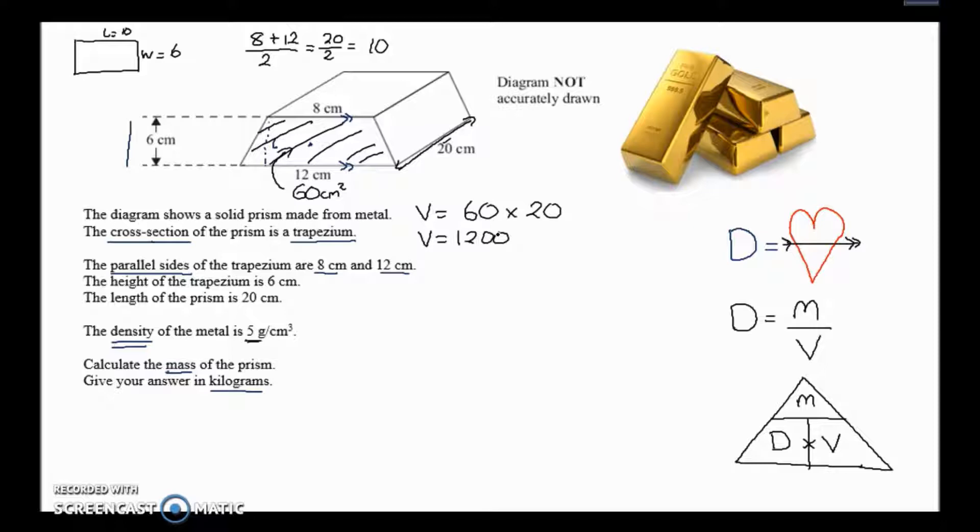To work out the mass then, let's go back to our actual question. We've got the volume now, we've got the density, great. Now we can work out the mass. So mass is equal to - if I cover up the mass, you imagine I cover this up, it would leave me with the formula density times volume. So mass equals density which is five from the question here, the volume we worked out to be twelve hundred, and then you will get a mass of 5 times 12 is 60, add on the zeros, you get six thousand.